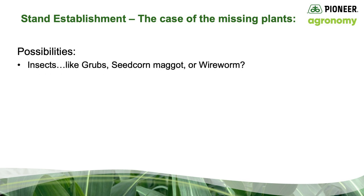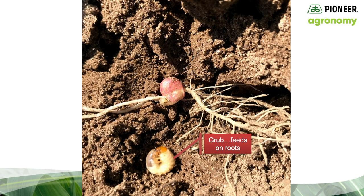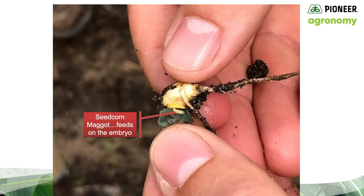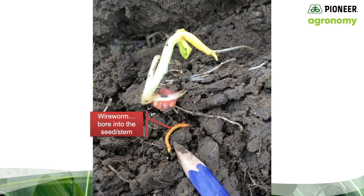The third possibility was that insects — like grubs, seed corn maggot, or wireworm — those would be the primary below-ground insects that would reduce stand in Michigan. There really wasn't any sign of insect damage by grubs, which would indicate feeding on the roots. There was no sign of insect damage by seed corn maggot, which would damage the embryo and potentially stop germination before coleoptile development. And there was no sign of insect damage by wireworm, which would bore into the seed and/or the coleoptile. While the pattern — one to two foot skips — is that which could be left by insects, there was no evidence that insects were playing much of a role in causing slow emergence in this field.